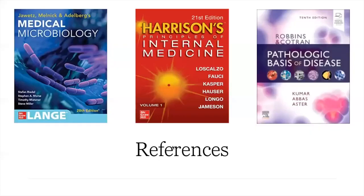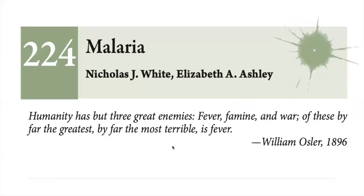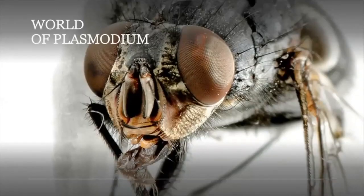These are the official references for this coaching module: Jowett's Medical Microbiology, the most recent edition of Harrison's Principles of Internal Medicine, and the most recent edition of Robbins-Cotran Pathologic Basis of Disease. We will be summarizing the key features of Chapter 224, Malaria, found in Harrison's. For the next 15 to 20 minutes, we will enter the world of Plasmodium.